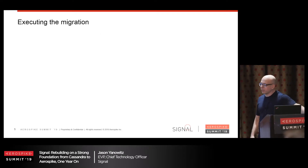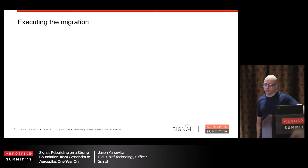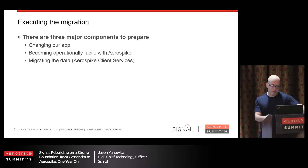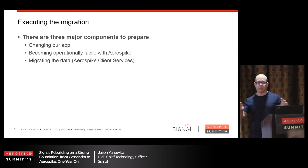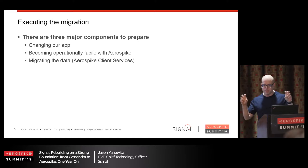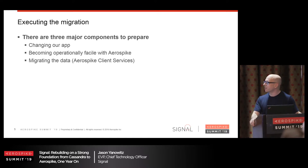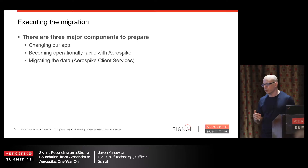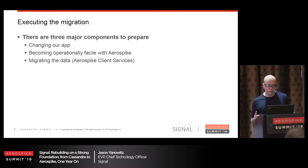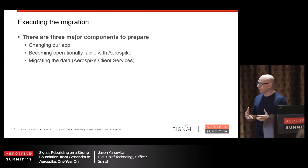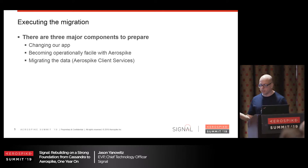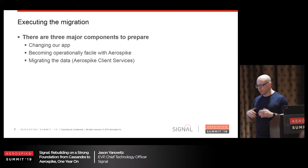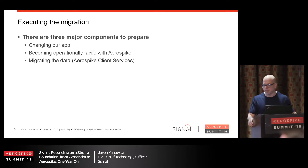We ended up signing a contract at the end of 2017 and began this project in January of last year. It had three major components. The first was changing the app that wrote to Cassandra to write to Aerospike — we had that level of indirection, so we just had to swap out the storage layer with no downtime. The second was becoming operationally expert with Aerospike: learning how to stand up and tear down clusters, change XDR topologies, backup, restore — everything to be operationally sound.